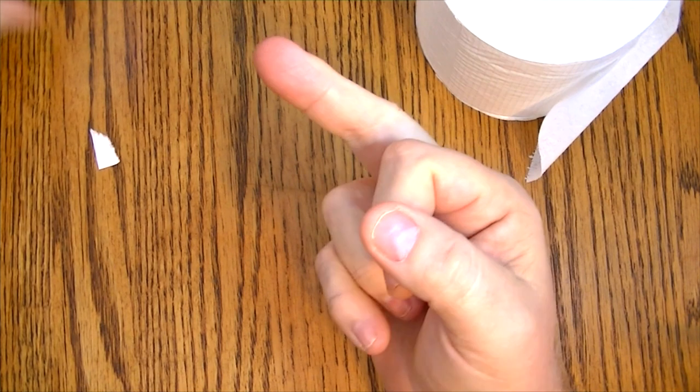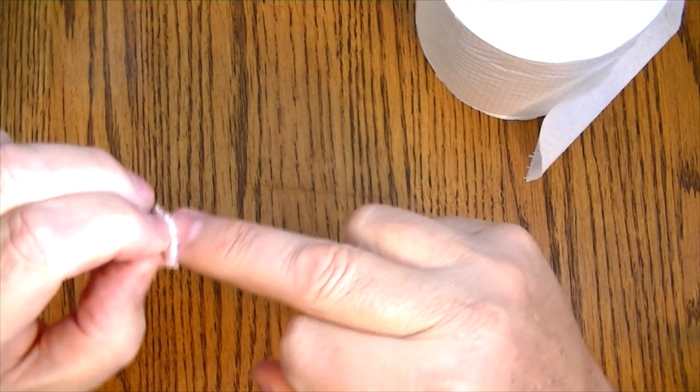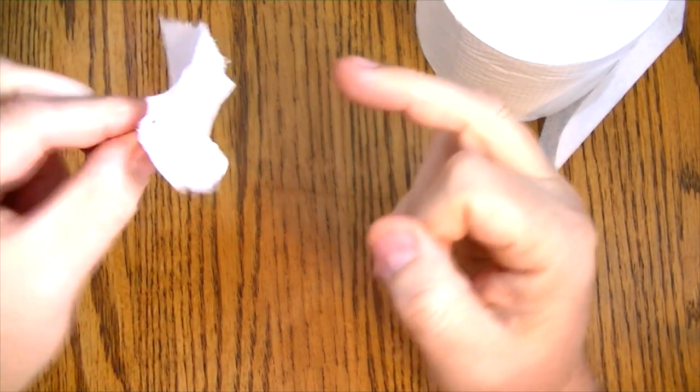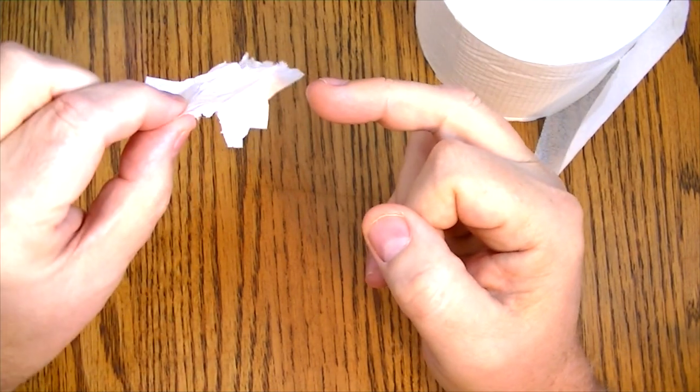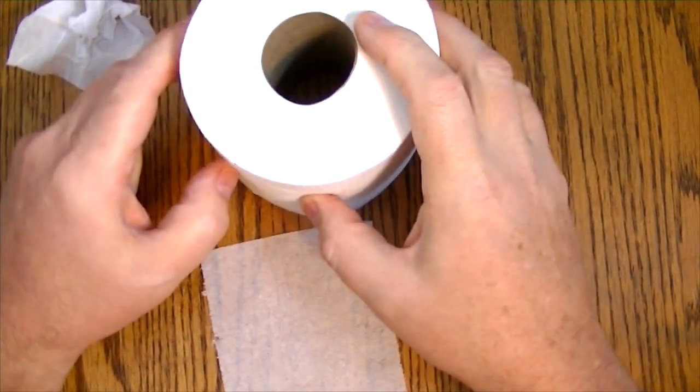But we're not done yet. We save this part right here. This is for cleaning out from underneath your fingernail when you're all done. So now you see that using just one sheet of toilet paper, that's assuming you only go once a day. This is how you can make this roll of toilet paper last for nearly three years.